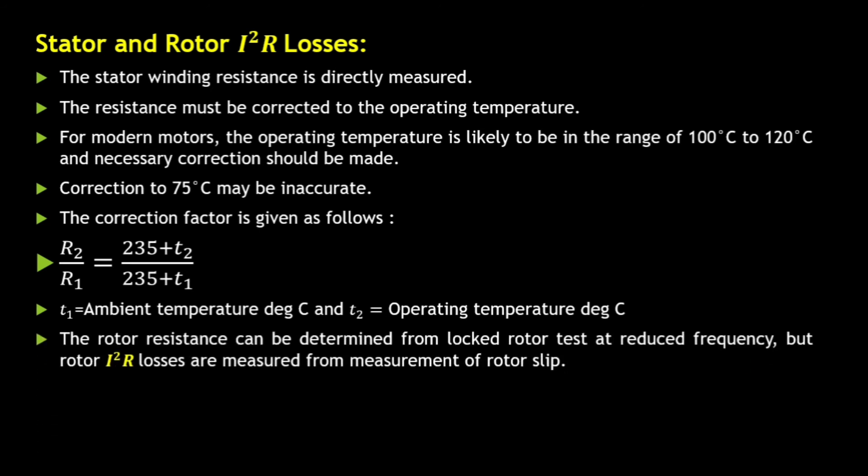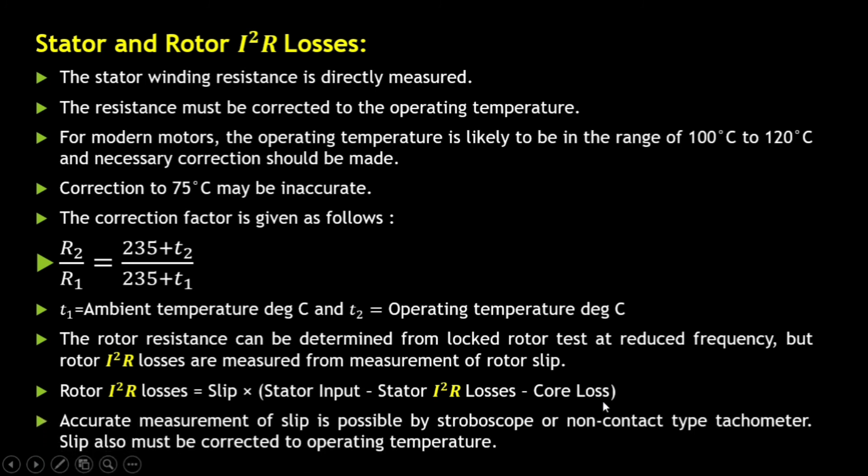Then the rotor resistance can be determined from the locked rotor test. We have seen this from the no load test, from the locked rotor test. But rotor I²R losses are measured from the measurement of the rotor slip. Rotor I²R losses formula is slip into stator input minus stator I²R losses minus the core losses. Then accurate measurement of slip is possible by stroboscope and non-contact type of tachometer. Stroboscope is a non-contact type of tachometer; you don't have to keep it in contact with the motor shaft. Slip also must be corrected to operating temperature.